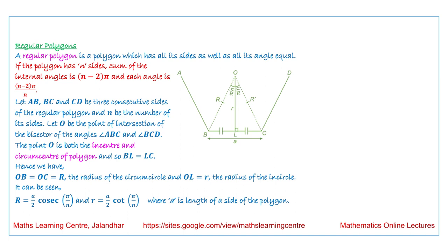The first definition we have is the regular polygon. If the polygon has n sides, then the sum of the internal angles is equal to (n minus 2) times pi, and each of its angles measures (n minus 2)π divided by n.